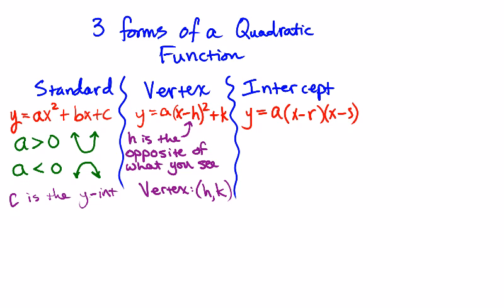The final one is intercept form, which we looked at in class yesterday. R and s are the x-intercepts. Just like with h, r is the opposite of what you see, and s is the opposite of what you see. The x-intercepts are written as (r, 0) and (s, 0). And again, 'a' does the same thing in all three forms.